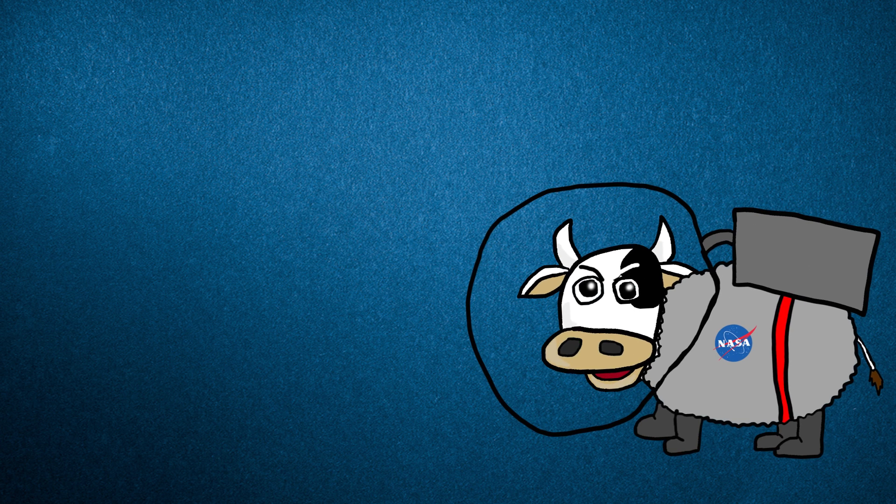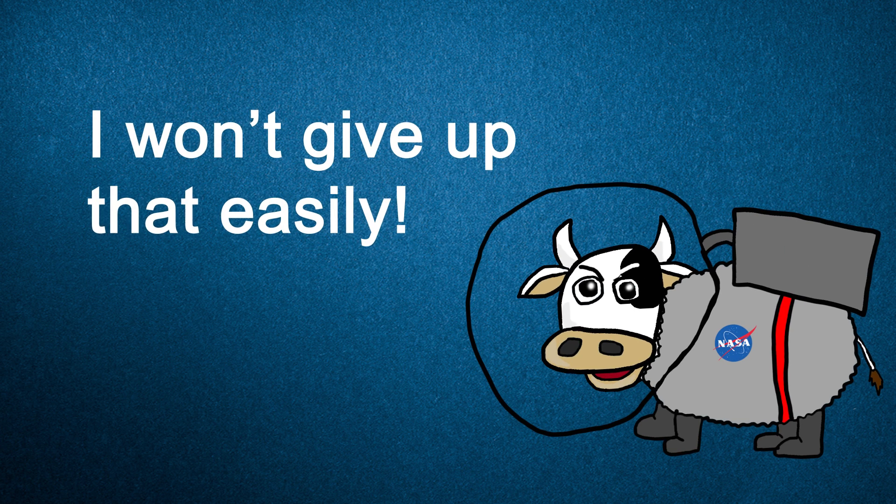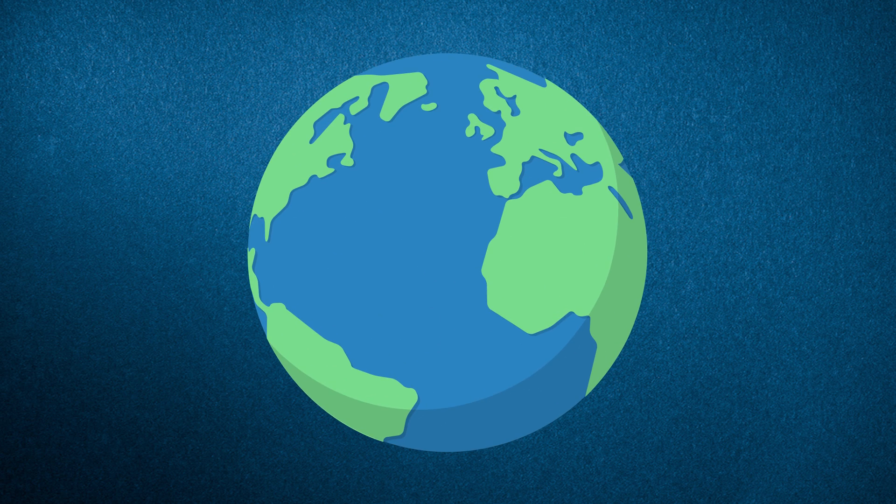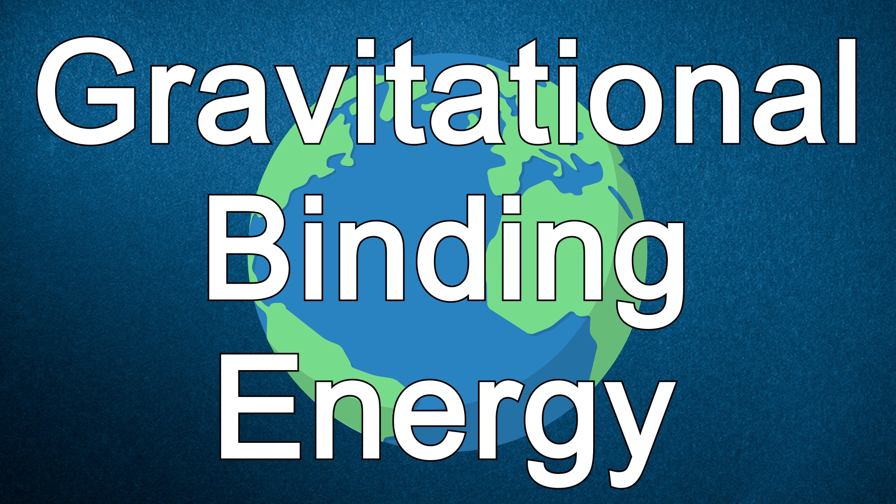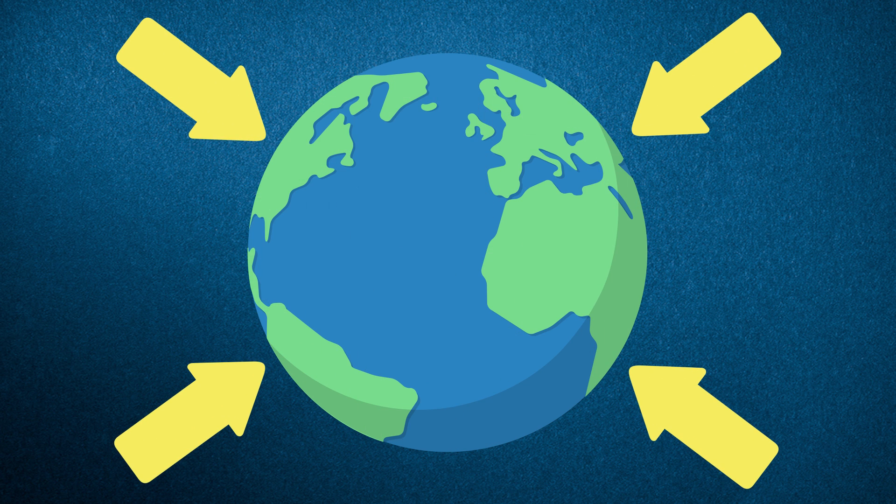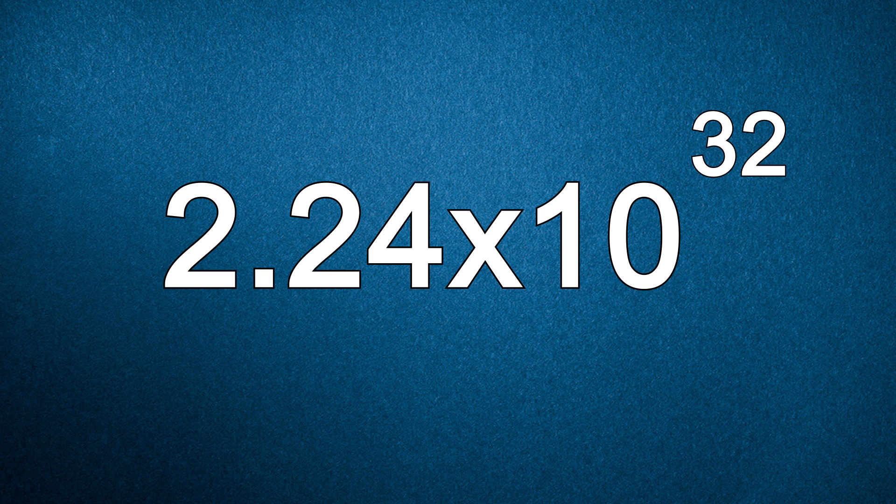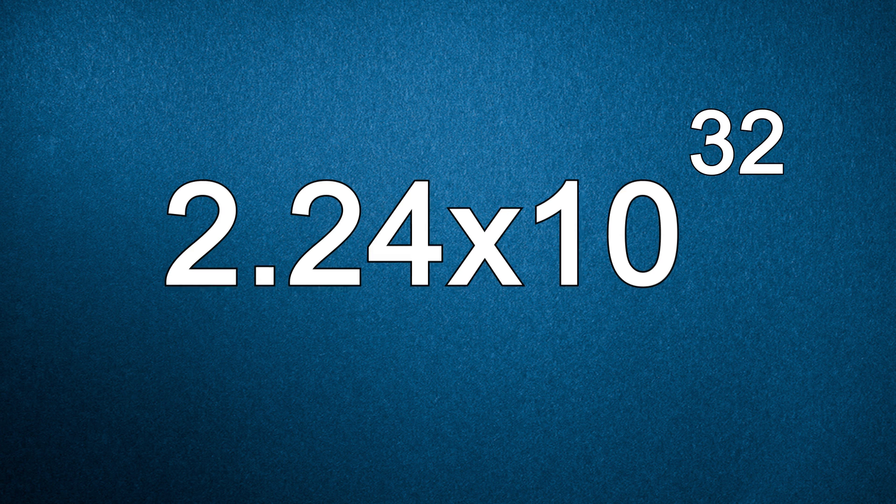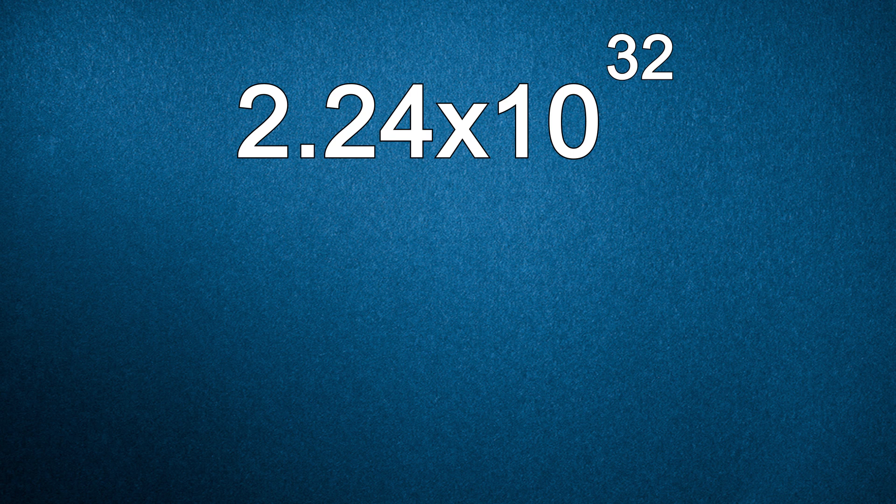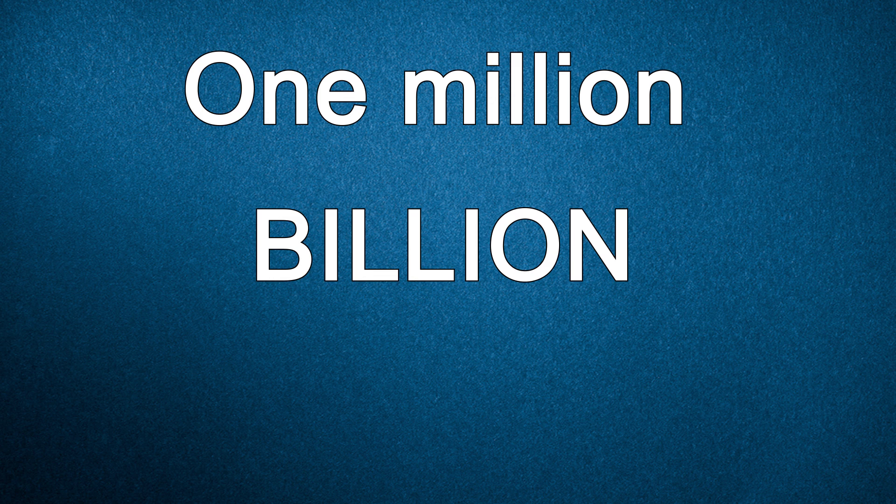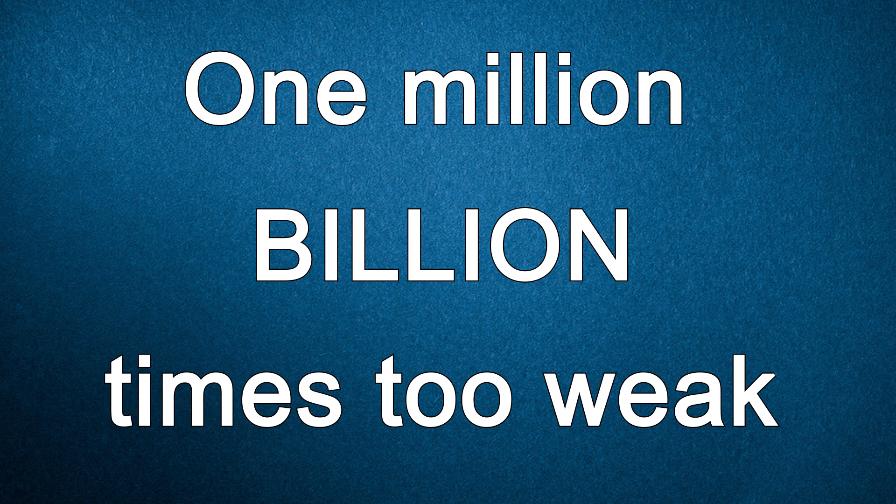But what if we were absolutely intent on using nuclear weapons to blow up the planet? How many would it take? To answer that, we need to consider what's called the Earth's gravitational binding energy, which is the cumulative strength of the planet's gravity holding itself together. The Earth's binding energy is roughly 2.24 times 10 to the 32nd joules, which is enormously powerful. The current nuclear arsenal could hypothetically generate 2.67 times 10 to the 19th joules of energy, which is a lot, but still 1 million billion times too weak to blow up the planet.